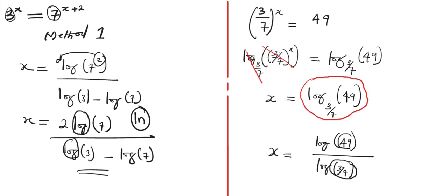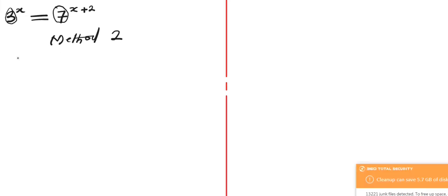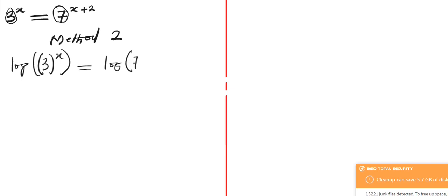If you use natural log you'll still have the same expression, but you won't be able to plug it into your calculator to get a more final numerical solution — so that is it for method one. Now let's use the second method to solve this problem. In this second method, we are going to take the log of both sides of the equation directly, so we have log of 3 to the power x equals log of 7 to the power of x plus 2.